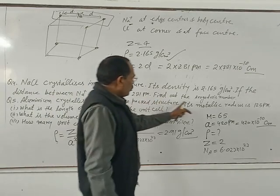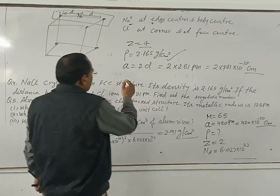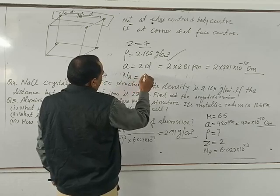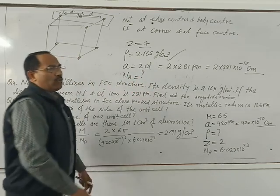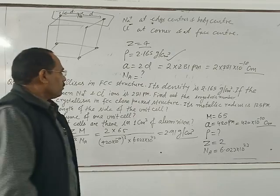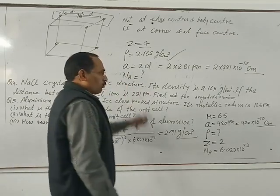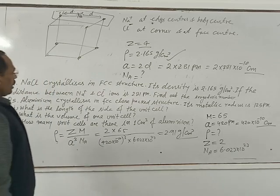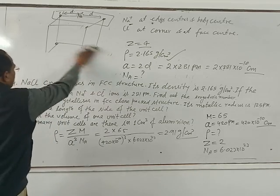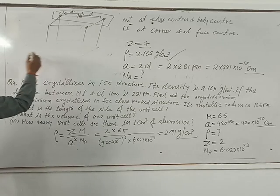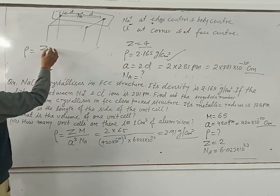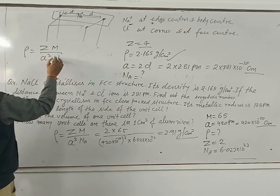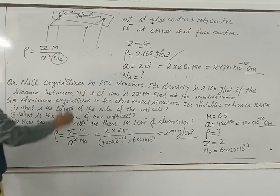Now find Avogadro's number. Avogadro's number is not given in this question, so it will be calculated. Using the formula rho equals Z times M divided by A cubed times N (Avogadro's number), this value of N is to be calculated.